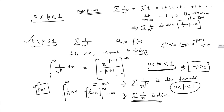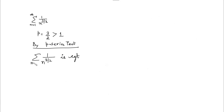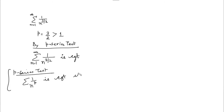Now let's apply this test to check the behavior of some series. First, consider the series 1 over n to the power 3/2. What is the value of P here? It is 3/2, which is strictly greater than 1. So by the P-series test, the given series is convergent, because any series of the form 1 over n to the power P is convergent when P is strictly greater than 1.